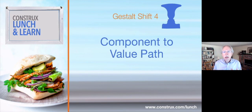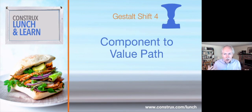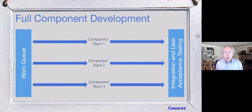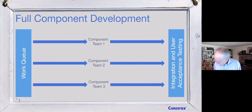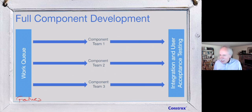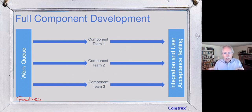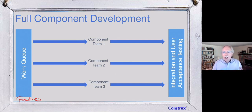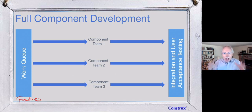My fourth gestalt shift is from component to value path — or as I've been calling it, a thread of the tapestry we weave through the work. Most of the time when I show up at a regulated company, they're doing full component or full feature development. The work queue is full of features; they spin up one team per feature. With 15 or 20 major features, you might have 200 people, and you don't have any chance to get things integrated and tested together until the very end. That's full component work.